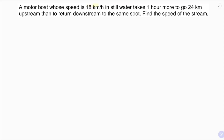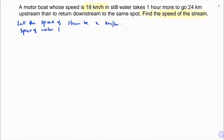A motorboat whose speed is 18 km per hour in still water takes one hour more to go 24 km upstream than to return downstream to the same spot. Find the speed of the stream. Let the speed of stream be x kilometers per hour. Speed of motorboat is given as 18 kilometers per hour.